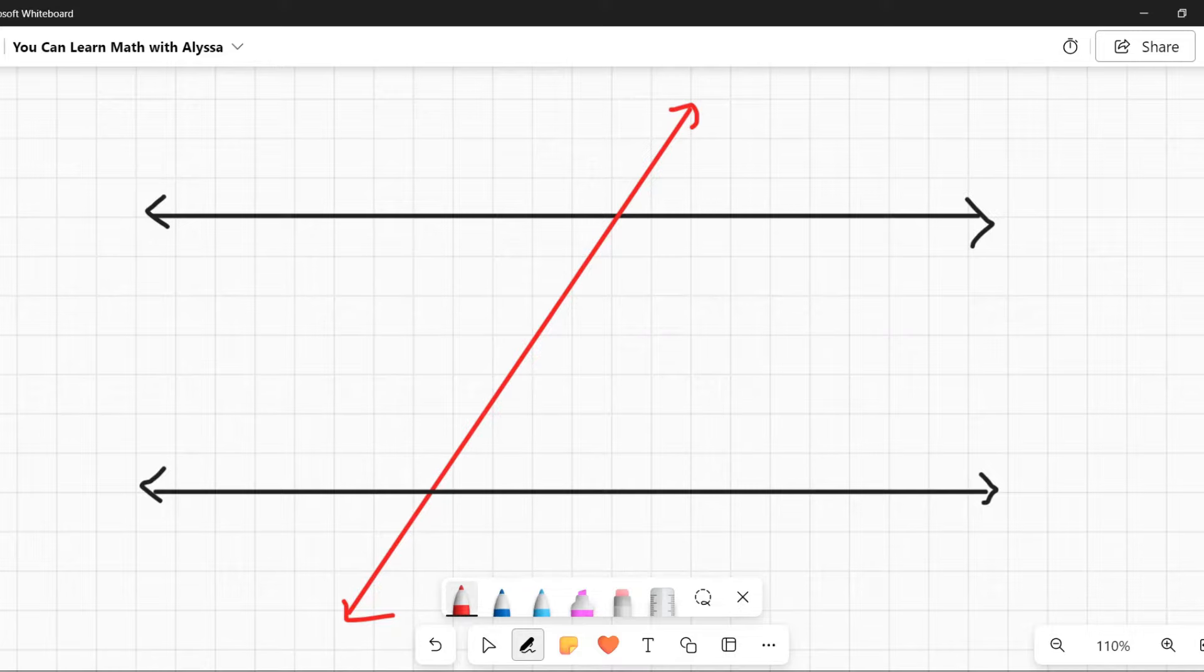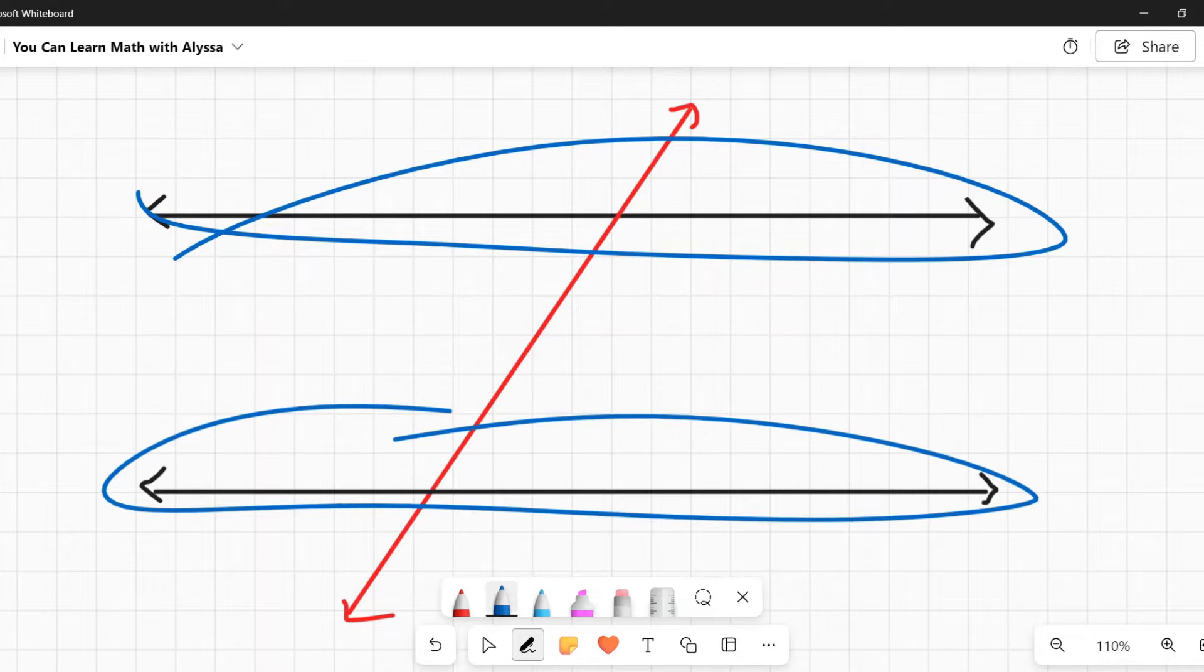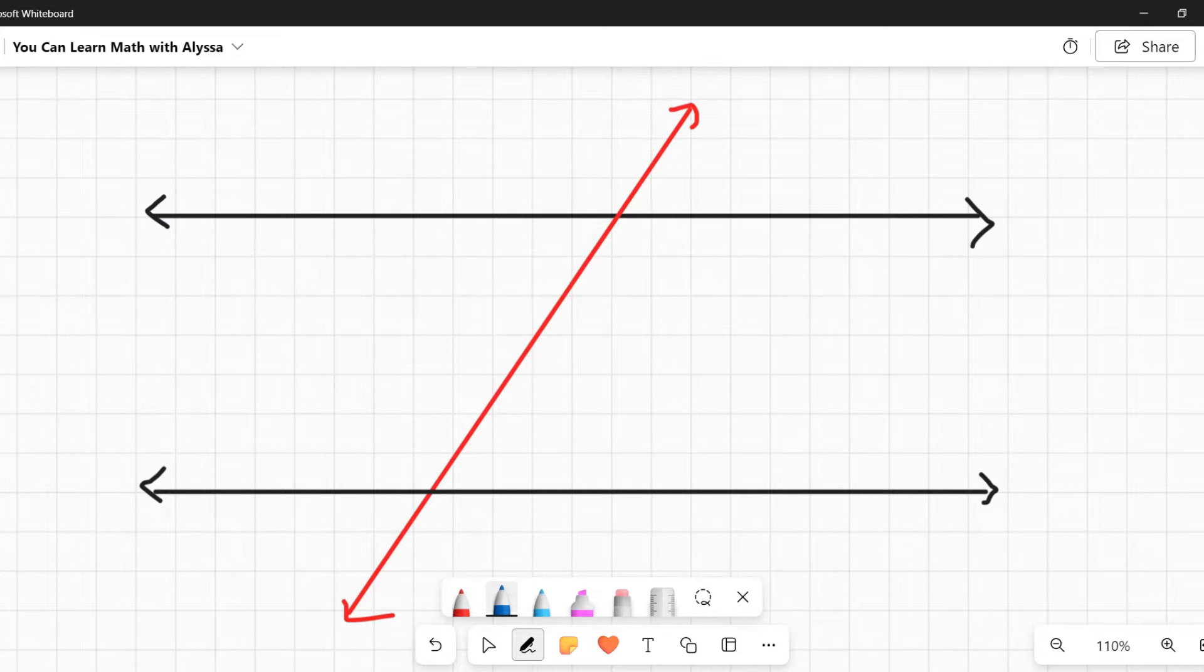So we're starting here, what are parallel lines? Parallel lines, here's our two parallel lines, they are lines that never cross. They're in the plane, they're going on forever, and in algebra terms, they have the same slope, so they never ever cross.